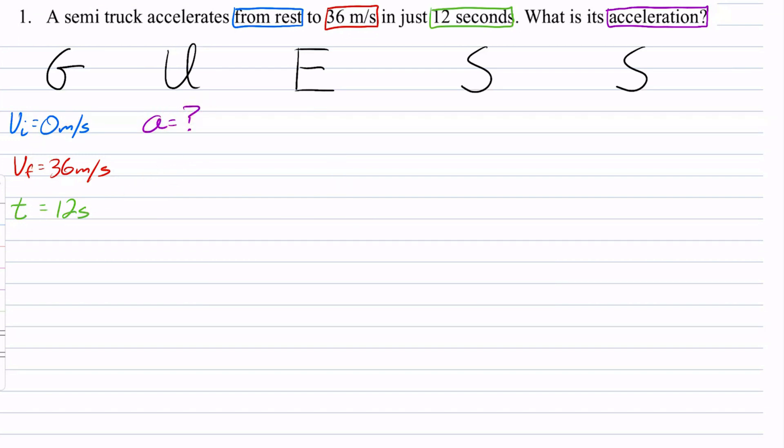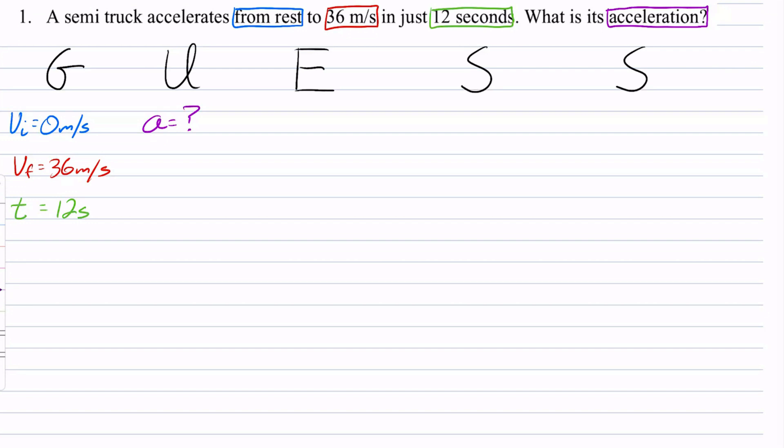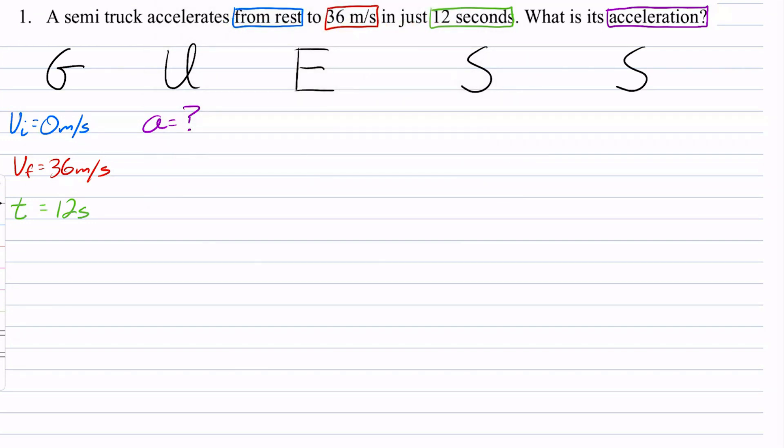Now I need a formula that contains all of these variables so that I can solve for my unknown. Now in this case it's easy. We have a formula that basically solves for A. But it's not always the case. There may be times where you're going to have to rearrange the formula.